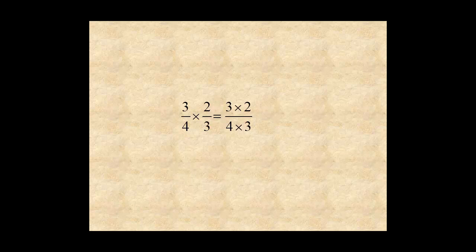There's another way to do this. You can simplify first and then multiply. This is called cross-cancelling. Since there is a 3 in the numerator and denominator, you can divide the numerator and denominator by 3. 3 divided by 3 is 1 in the numerator, and 3 divided by 3 is 1 in the denominator.